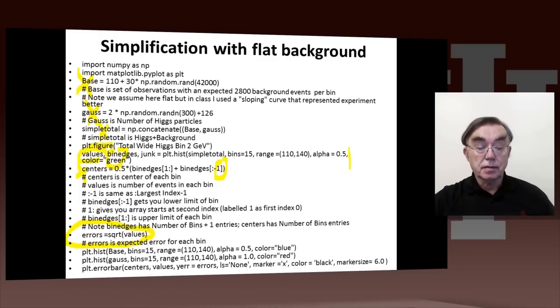And here we have, we add some more stuff to our histogram. We plot not just the total, here's the total, simple total. We call it simple total because it's not a sloping background. Here we plot the base, the background. Here we plot the Higgs, the Gauss. And here we plot the error bars.